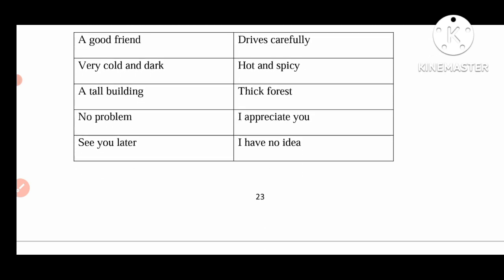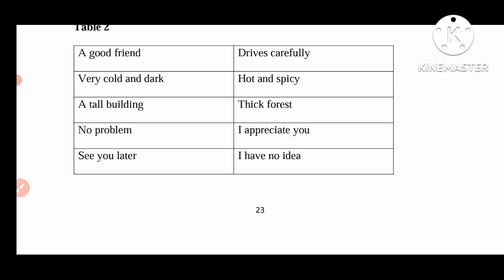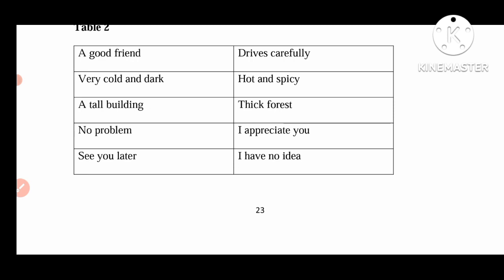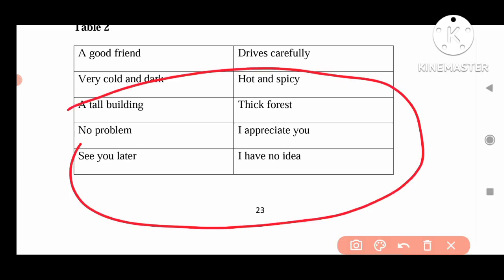Next is Activity 3. Here there are so many phrases — for example, 'a good friend,' 'very cold and dark,' and like that. There are so many phrases. We will read those phrases and write in the notes. Here we develop listening, speaking, and writing skills.